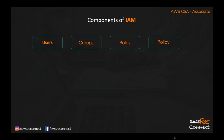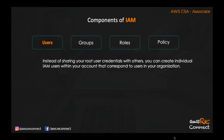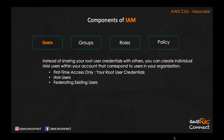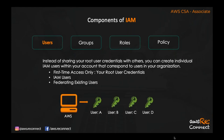There are four components of IAM: user, group, roles, and policy. A user is a credential or a physical person who has authority to access your AWS account. Instead of sharing your root user credentials with others, you can create individual IAM users within your account corresponding to users in your organization. When you first create an AWS account, you get one root user credential — that is for first-time access only. You should always create a new credential for every individual user and never share credentials between two people.